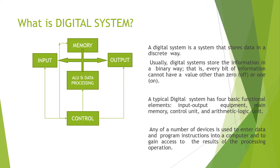Now, coming to the introduction of digital systems. A digital system is a system that stores data in a discrete way — binary data, that is either 0 or 1. It transmits, displays, and processes this binary data. A digital system includes the ALU and data processing unit, the control unit, memory, and input/output — just like any computer system.